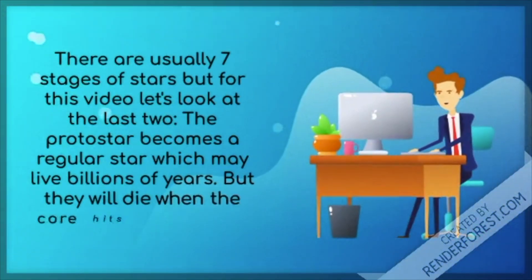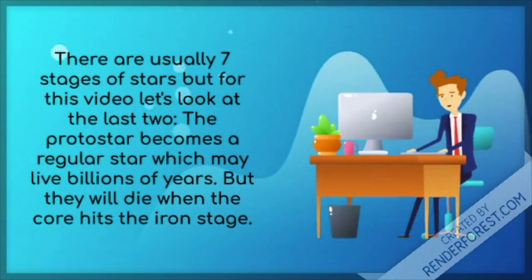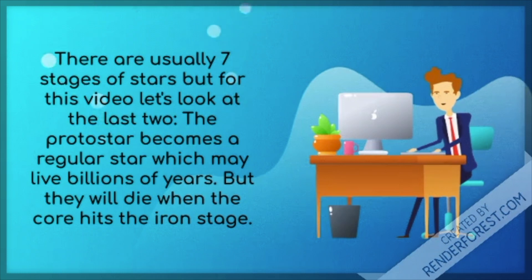There are usually 7 stages of a star, but for this video, let's look at the last two. The protostar eventually becomes a regular star, which lives for billions of years, but they will die when the core hits the iron stage.